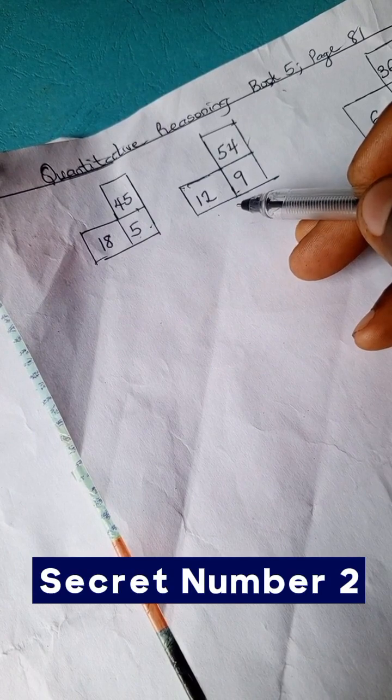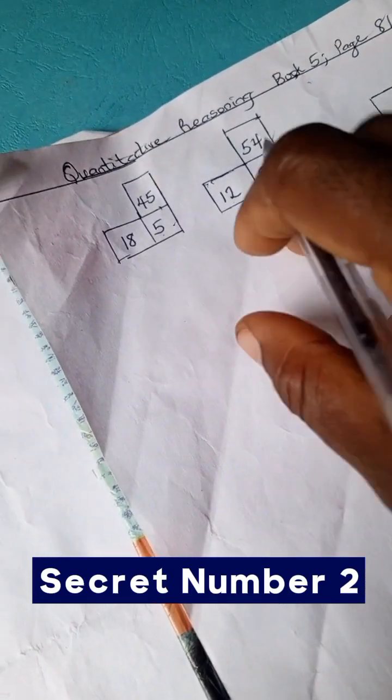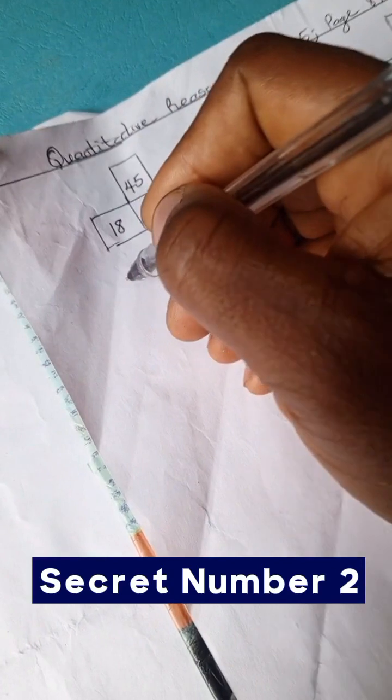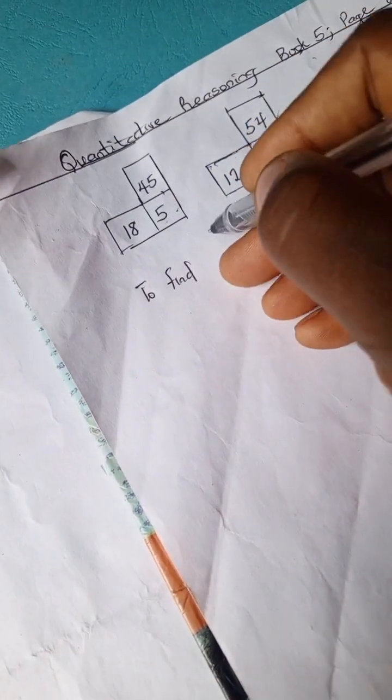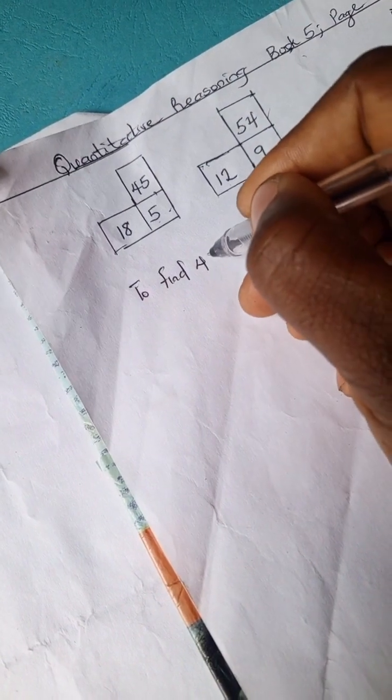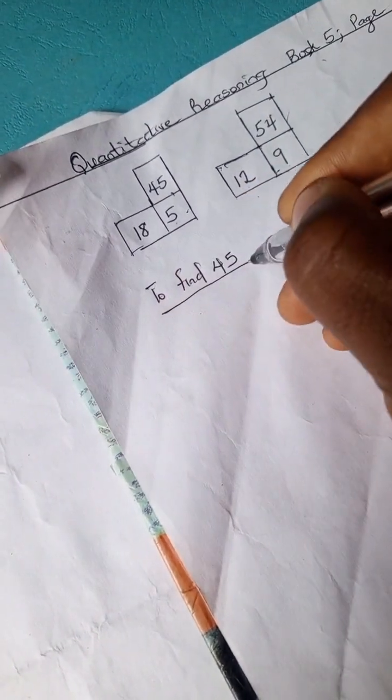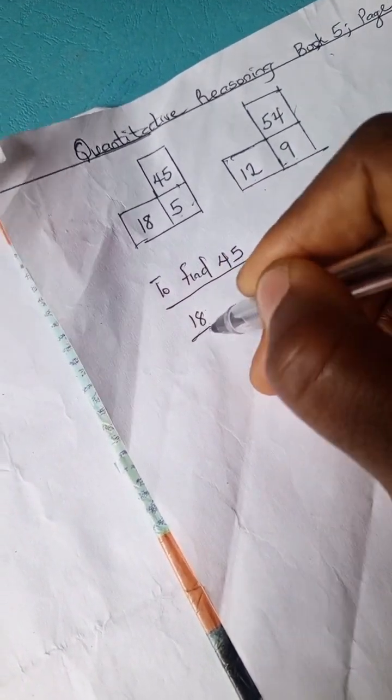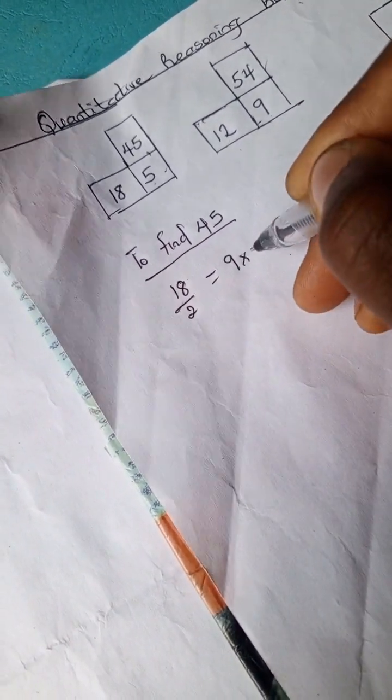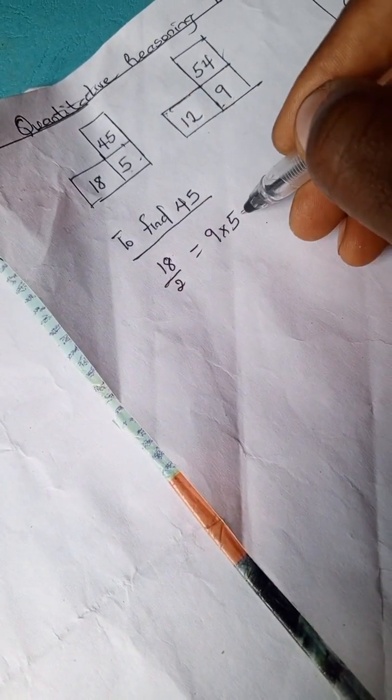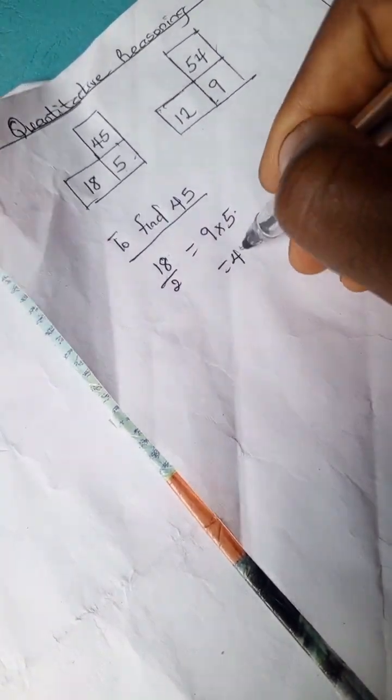is 6. 6 times 9 is 54. Okay, so we can work with this. So to find 45, we have 18 divided by 2 is 9, 9 times 5, here we have 45.